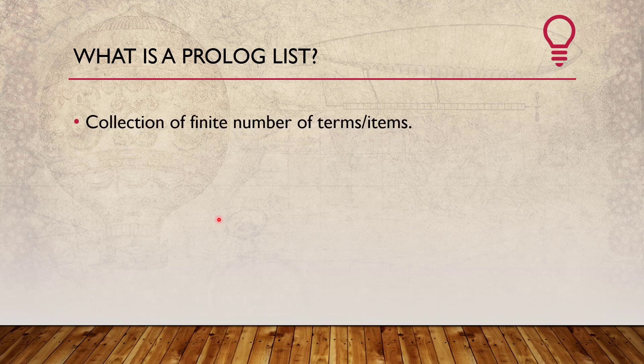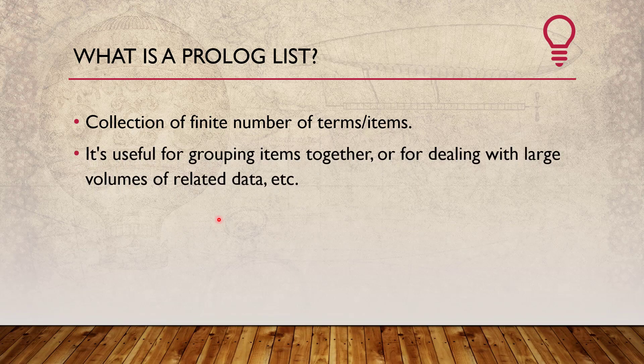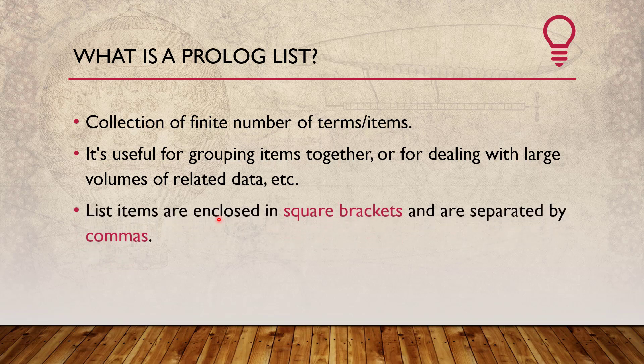As we know from any other programming language, a list is basically a collection of a finite number of elements or items. The same concept exists for a Prolog list — it is a finite collection of numbers or items. We will talk about those terms or items very soon. It is useful for grouping related items or dealing with large volumes of related data. Technically, a Prolog list is enclosed in square brackets and the items are separated by commas.